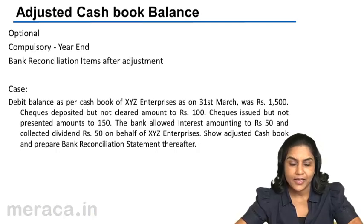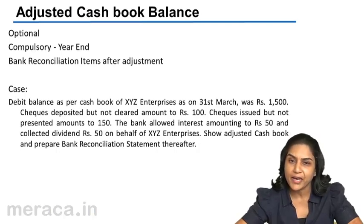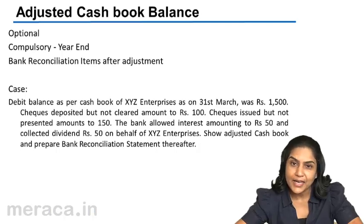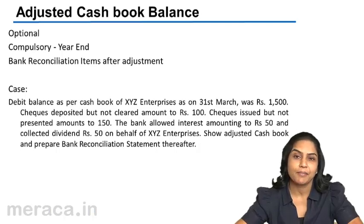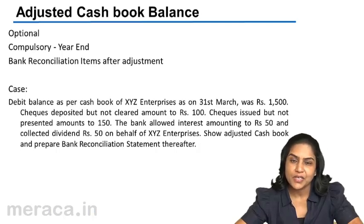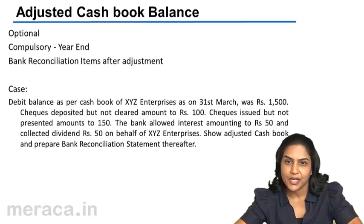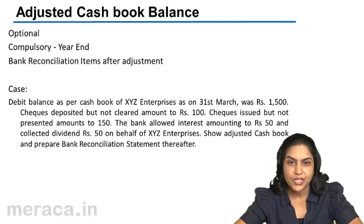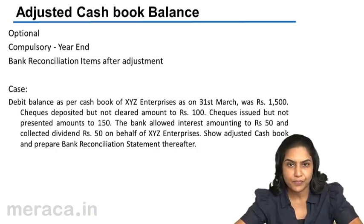Similarly, there could be omissions. When we talk about omissions — bank charges, income which is collected by the bank — these are incomes and expenses incurred, but not recorded in the cash book. These also have to be brought into the cash book.